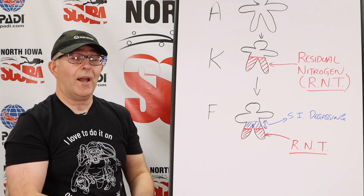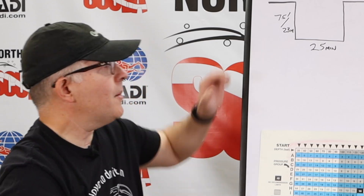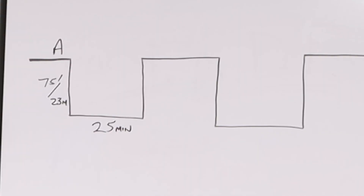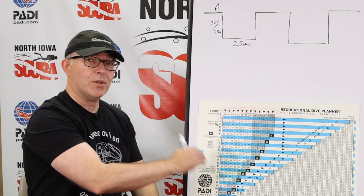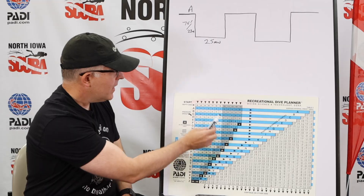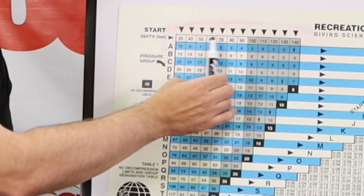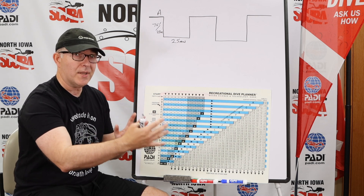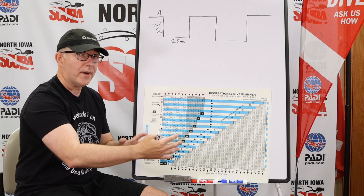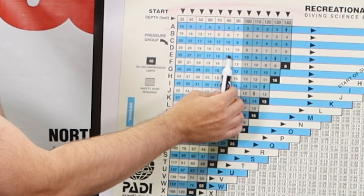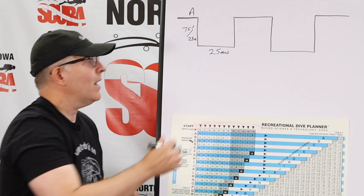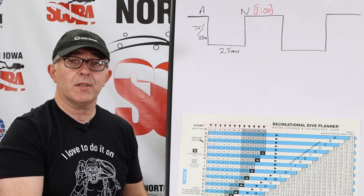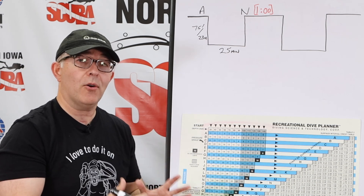Let's do an example to show how all this works. For the first dive of the day, I am in pressure group A. We're going to dive to 75 feet or 23 meters for 25 minutes. This is an imperial dive table — if you're following along in metric, they work exactly the same. There is no 75 feet on the table; I've got a choice between 70 and 80, so I'm going to choose 80 because we always want to be conservative and overestimate our depth. For 25 minutes, I come down until I find 25, then come back across — and I'm now an N diver. I'm going to choose a one-hour surface interval. So how do we calculate what that does to our pressure group when we're out of the water for one hour?